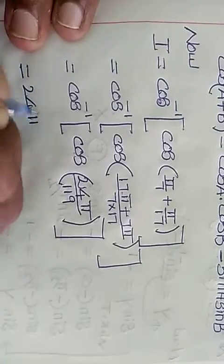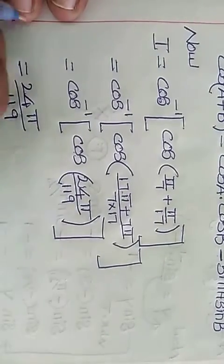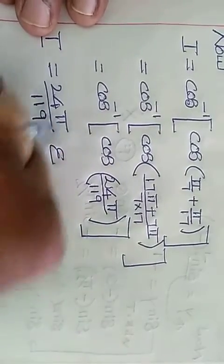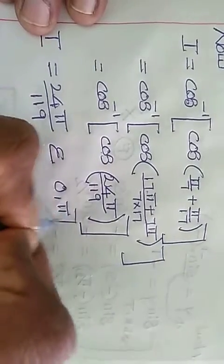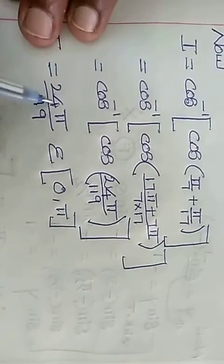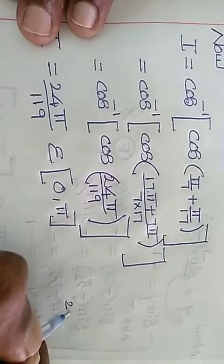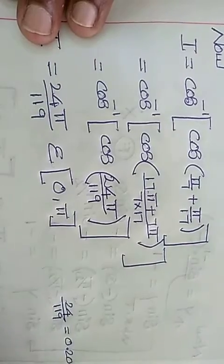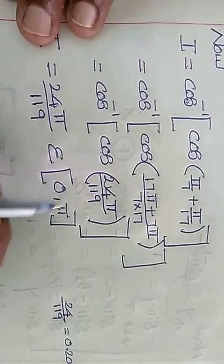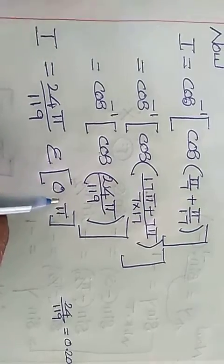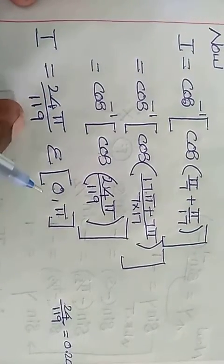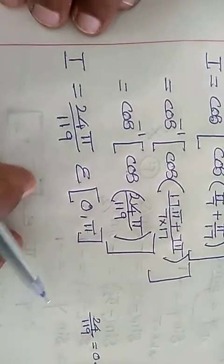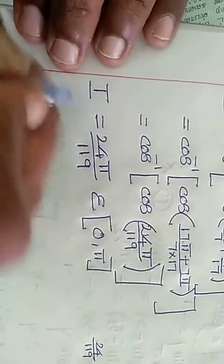24 pi divided by 119. So given question is equal to, which belongs to cos inverse of cos theta equals theta, which belongs to the interval [0, pi]. 24 pi divided by 119.